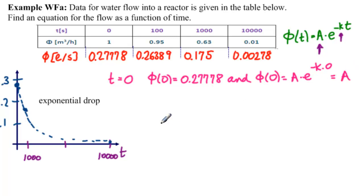fee of 0 equals a times e to the minus k times 0. This is 1. That's a. So we can say that a equals 0.27778.